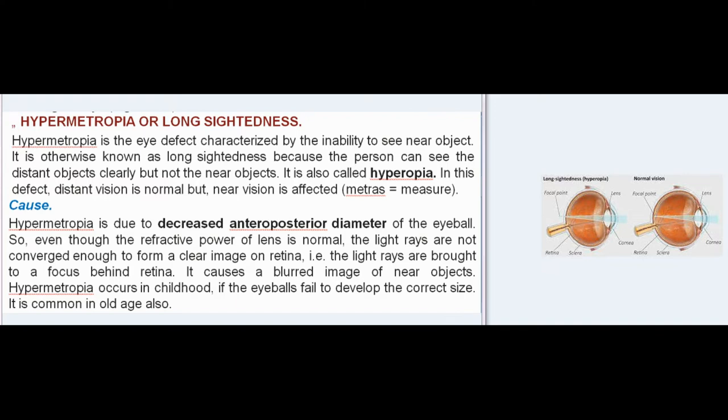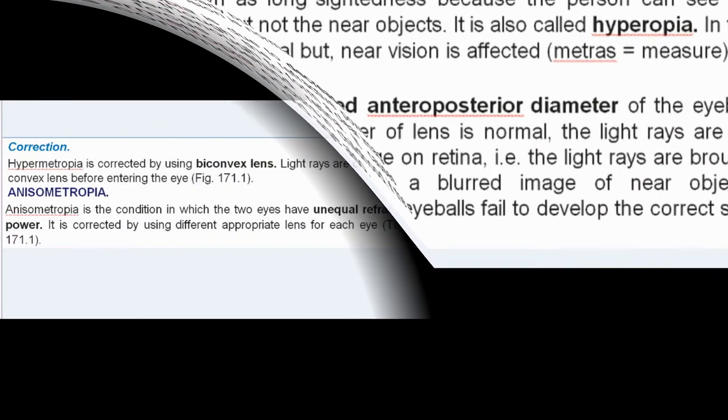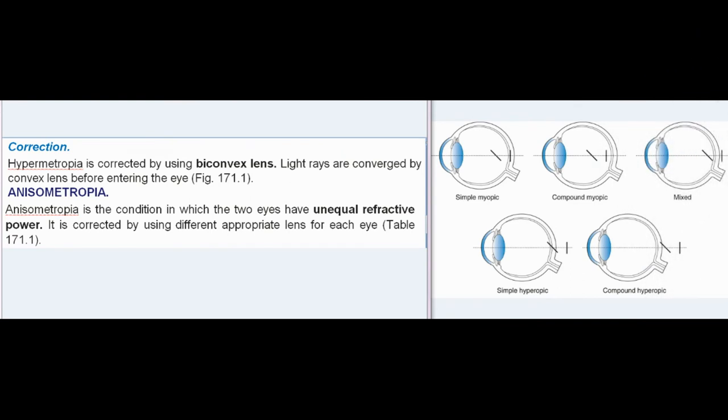Hypermetropia occurs in childhood if the eyeballs fail to develop the correct size. It is also common in old age. Correction: Hypermetropia is corrected by using a biconvex lens. Light rays are converged by the biconvex lens before entering the eye, as shown in fig. 171.1.